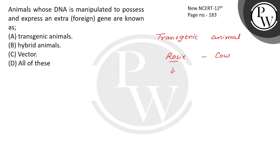There are also transgenic sheep. Alpha Antitrypsin, which helps to treat Emphysema — it is present in its milk, it is going to be introduced to it. So transgenic animals.